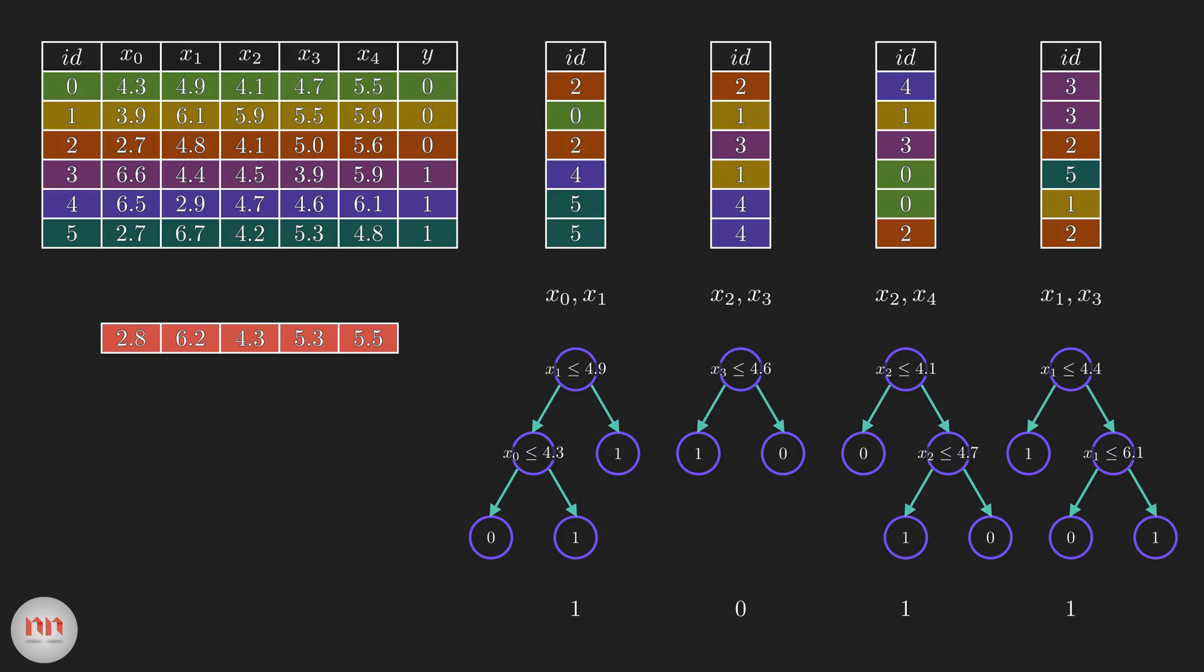Now we have to combine all the predictions. As it's a classification problem, we will take the majority voting. Clearly, one is the winner. Hence the prediction from our random forest is one.